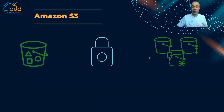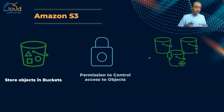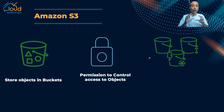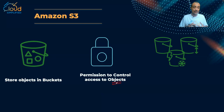For S3, objects are stored in buckets — you can think of buckets as folders. And you have full control over these objects. Using IAM policies, you can specify exactly who can access the data and what they can do with it.